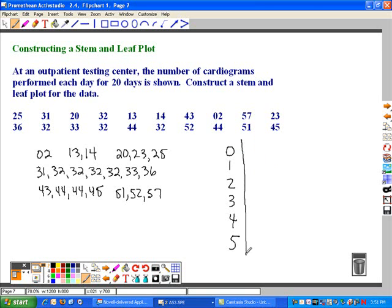And then we record the leaves, and they need to be recorded from smallest to the largest in order coming out from the stem. And so it's 0, 2, so we write a 2 beside the 0. Then in the teens, it's 13 and 14, so you write a 3, a little bit of space, and a 4. We have 20, 23, and 25. We have 31. We have 4 32s, so we're going to write down 4 2s. Then 33 and 36, so we write down the 6. Then in the 40 row, we're going to put a 3, 2 4s, and a 5. And then in the row for the 50s, we're going to put 1, 2, and 7.